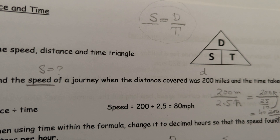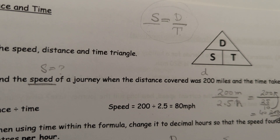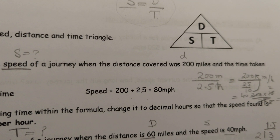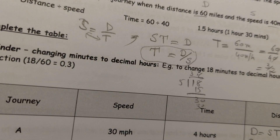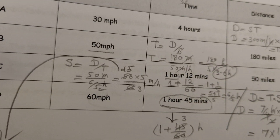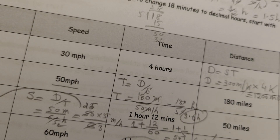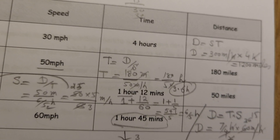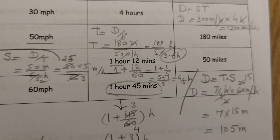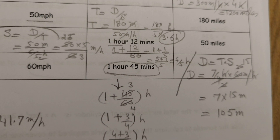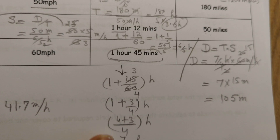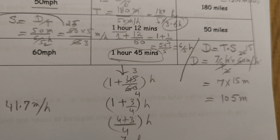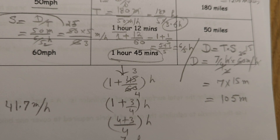This is the approach for all these problems — we use the single formula speed equals distance divided by time, rearranged as needed. We have done all the questions. Hopefully after watching this video you can easily understand — simply plug in the values, do the simplification, and you will get your answer.